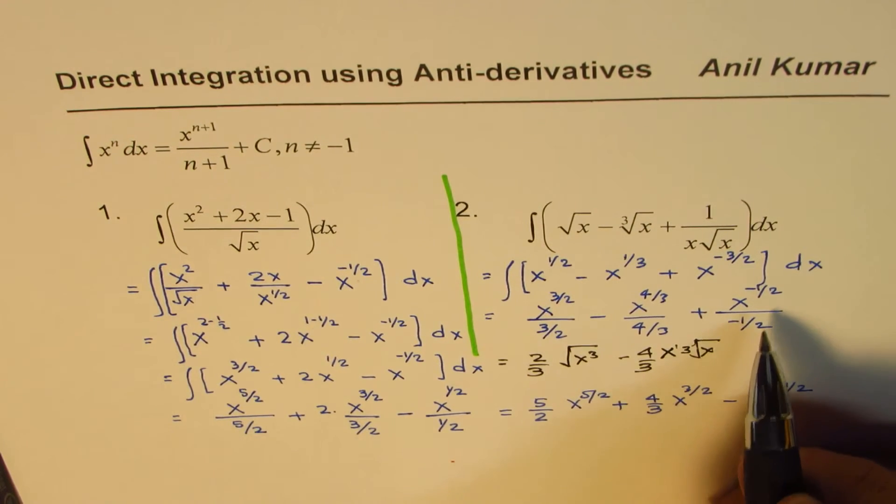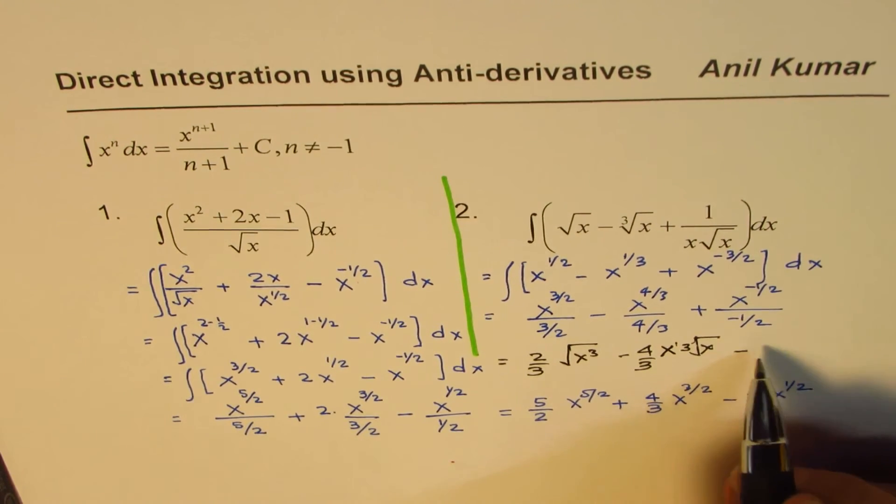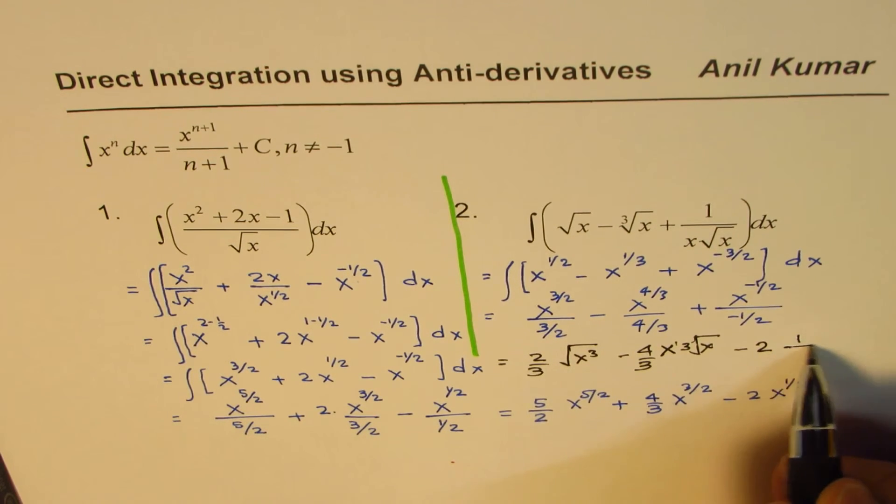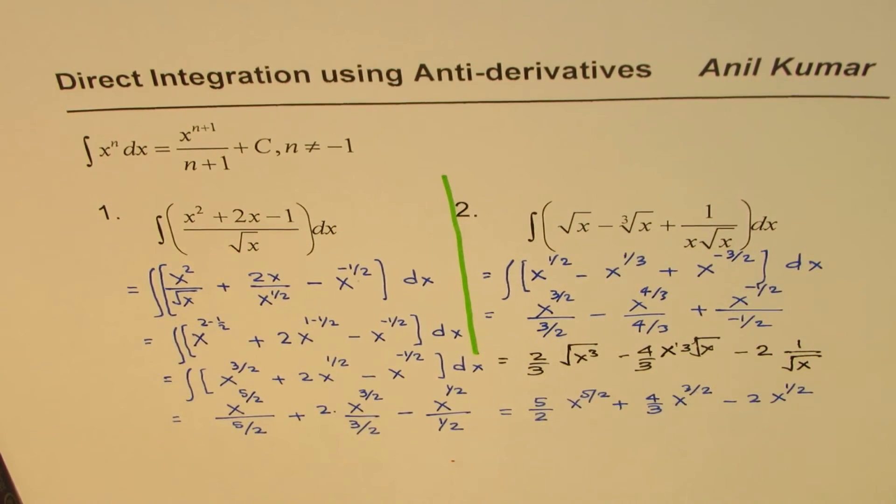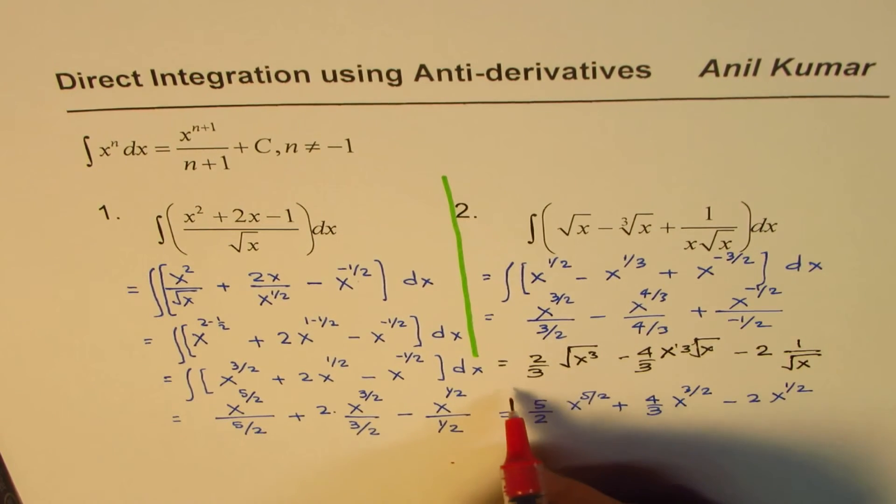You can simplify this. And in this case, we have minus 2. And that comes in the denominator, 1 over square root x. So that is how you could write down your answer for the same.